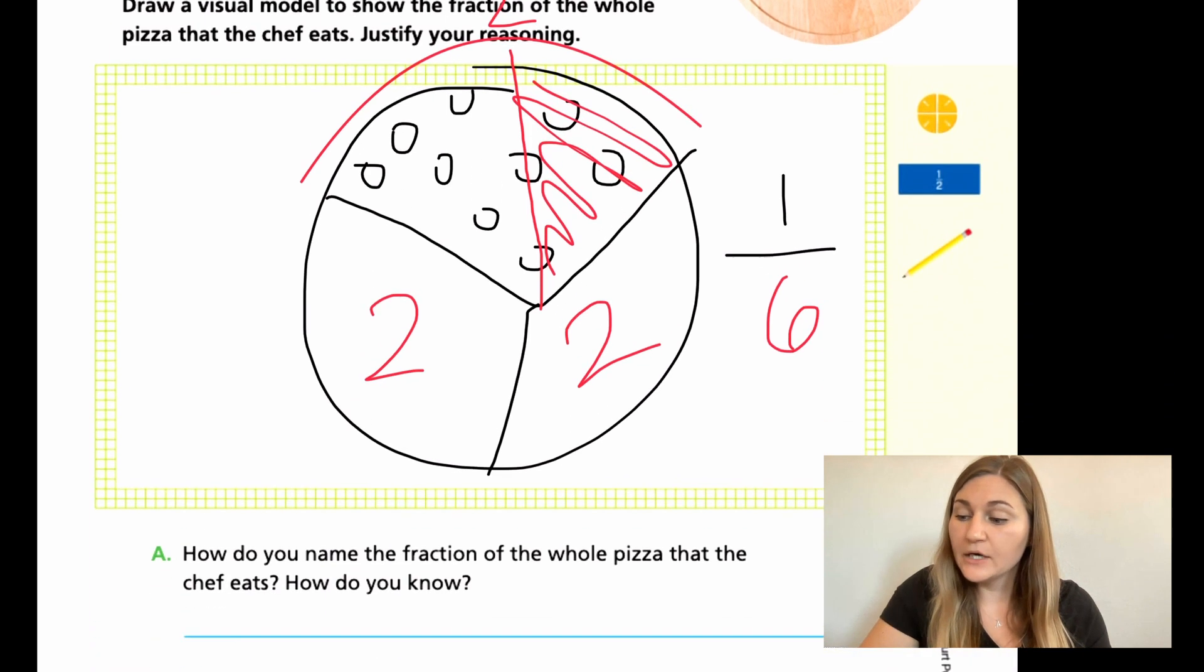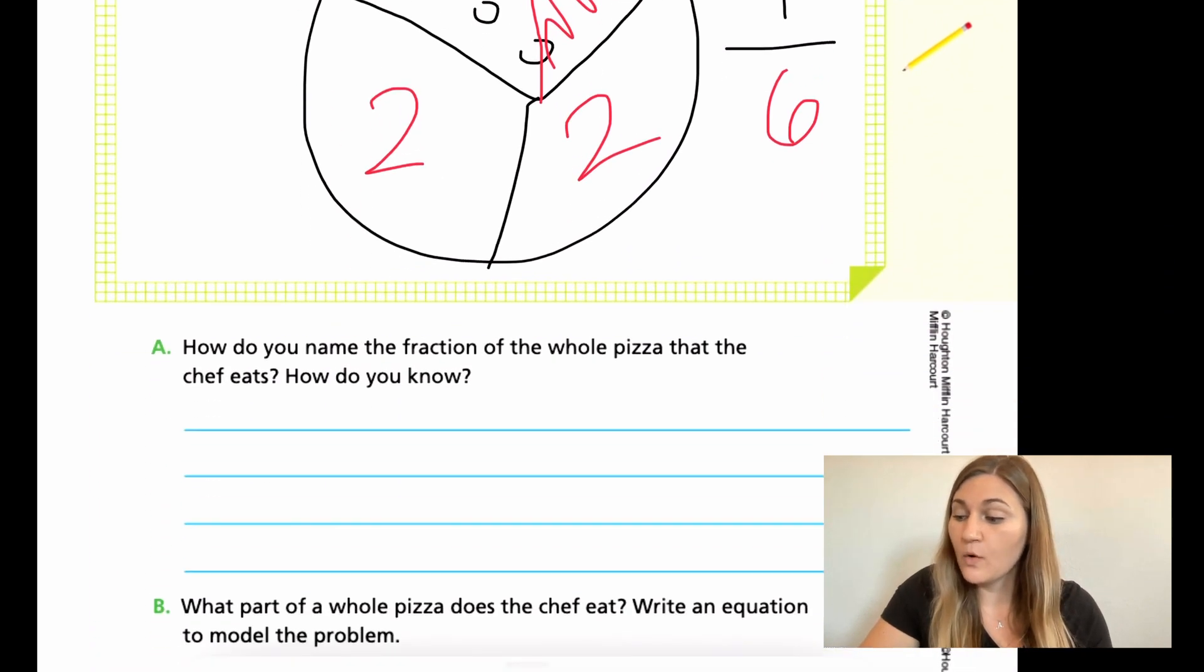So A, how do you name the fraction of the whole pizza that the chef eats? And then how do you know? So the way that we named this is we, I split the one third that I had into a half. And then I repeated that for the rest of the pizza. So I knew that there would be six pieces total in my pizza.